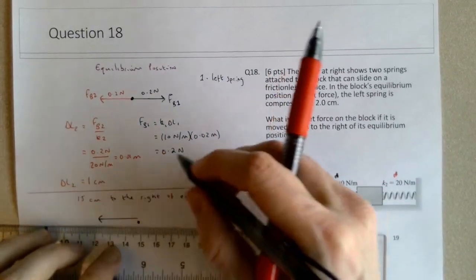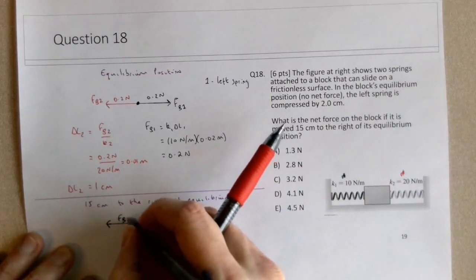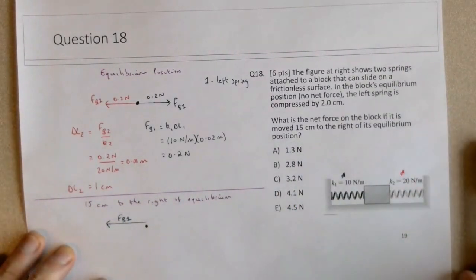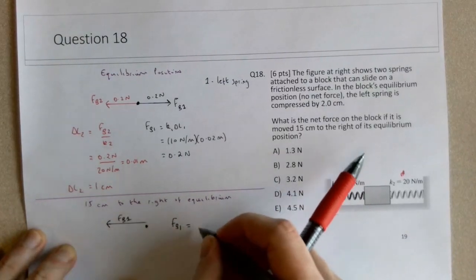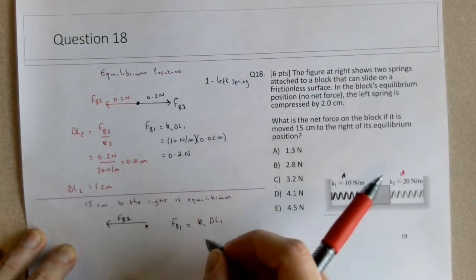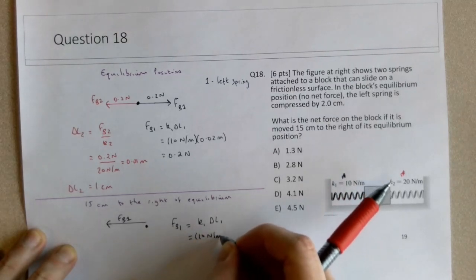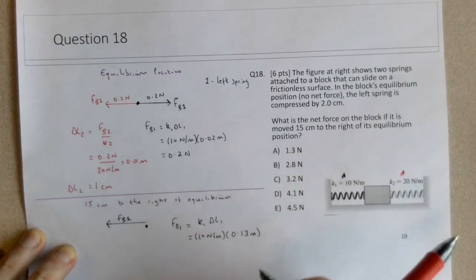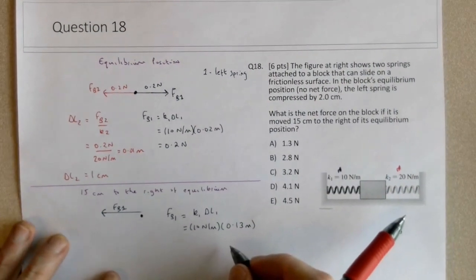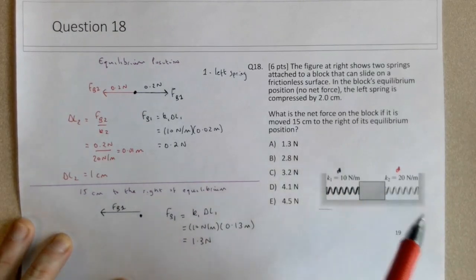And I'm not drawing these to perfect scale. So this will be the F on the block by spring 1 in this new situation. And Fb1 will be equal to K1 times deltaL1. So in this case, it's still the same spring constant, of course. But this time, it's stretched 13 centimeters, or 0.13 meters. So it exerts a force of 1.3 newtons to the left.